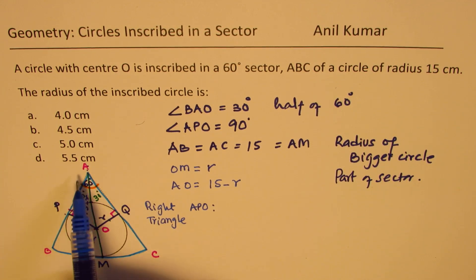So in this right triangle, APO, OA is the hypotenuse, and PO is the opposite side of angle 30 degrees.